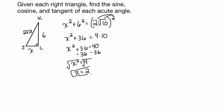Perfect. So now we know that this side, instead of calling it x, we can call it 2. Now we can go on and find the sine, cosine, and tangent of each acute angle, because we know all the measures of the sides.